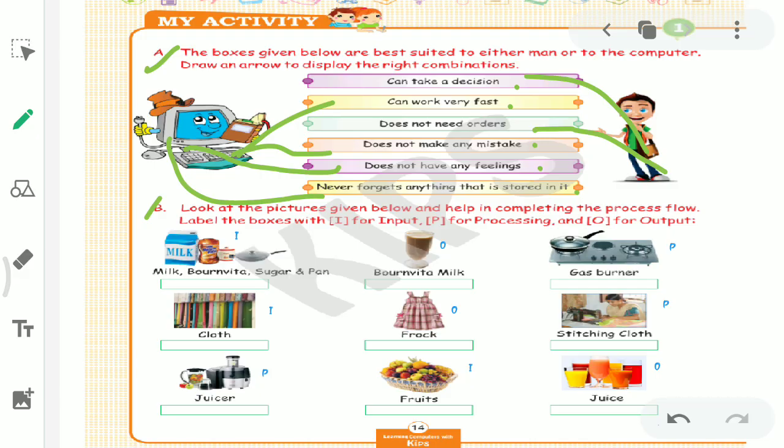Look at the pictures given below and help in completing the process flow. Label the boxes with I for input, P for processing, O for output. Let's look at the first example. There is milk, sugar, pan. These are all things - these are inputs. Now we are seeing burner - this is what processes it. When we boil it on the burner, that is processing. Output will be the final result.